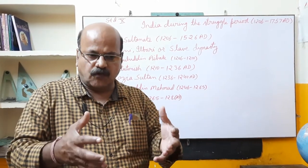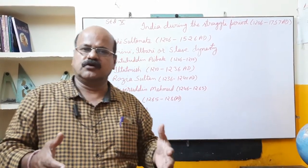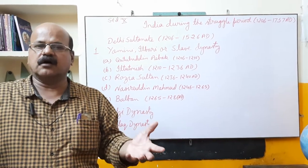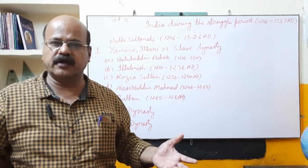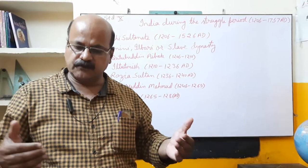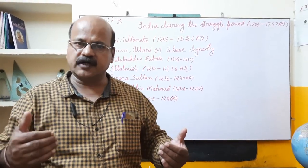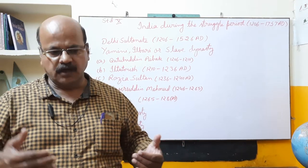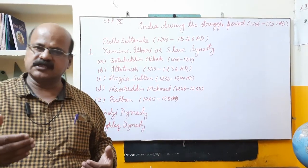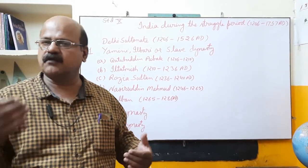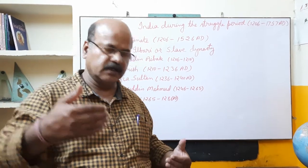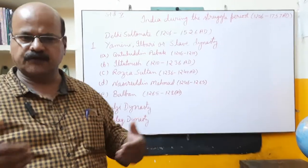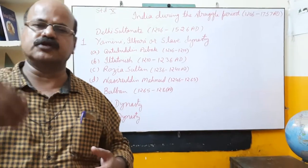The second attack took place on the ports and Debal court of Sindh, which also was made unsuccessful. But the most significant attack took place in 712 AD by Muhammad bin Qasim. This war, which took place in Sindh, resulted in a new situation in India, and from then on Muslim invaders became powerful. After that, Muhammad Ghazni came to plunder the wealth of India. He fought in Kashmir, Punjab, and went up to Gujarat.